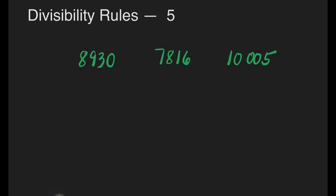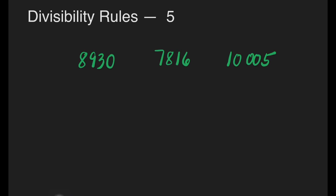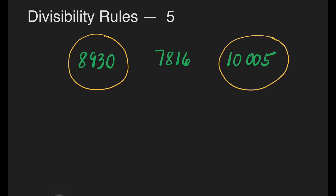We have another divisibility rule, and that is for 5. Which of these 3 numbers is divisible by 5? Is it 8,930; 7,816; or 10,005? We can say that 8,930 and 10,005 are divisible by 5 because they end with 5 or 0. When a number is divisible by 5, it has to end with 5 or 0. So 7,816 is not divisible by 5.